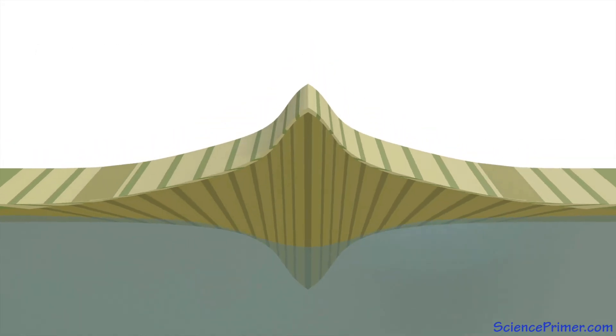Isostatic adjustment ends when erosion completely removes the mountain and the crustal root rises until its depth matches the surrounding areas.